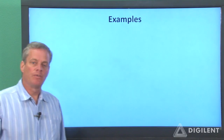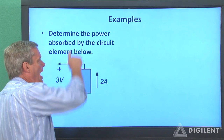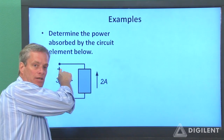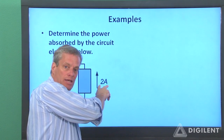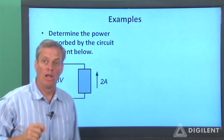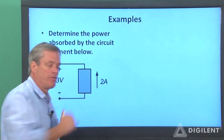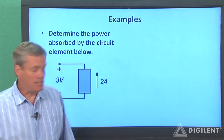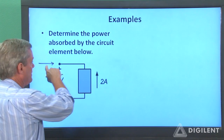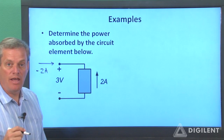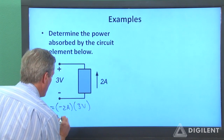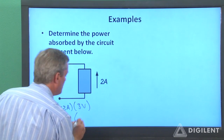Let's do a couple more examples. I want to determine the power absorbed by this circuit element. The voltage difference is 3 volts with this voltage higher than this voltage. The current through the element is 2 amps going into the negative voltage terminal — that's inconsistent with the passive sign convention. Let's change the current direction instead. If I change my current direction, I have to change the sign on current, so it becomes negative 2 amps. The power for this element is negative 2 amps times 3 volts, which is minus 6 watts. So it's negative 6 watts absorbed, meaning this element is actually generating power.